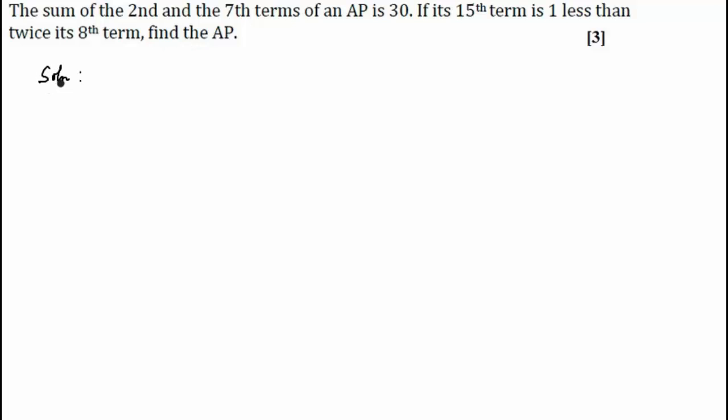We are not even given a and d, so first we'll assume the first term of the AP is a and common difference is d. So we have two variables, a and d, and we are given two conditions.